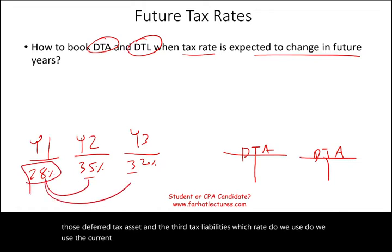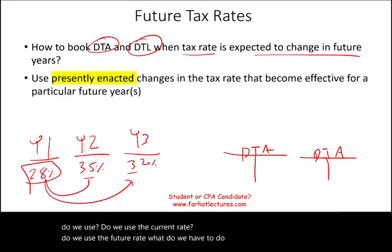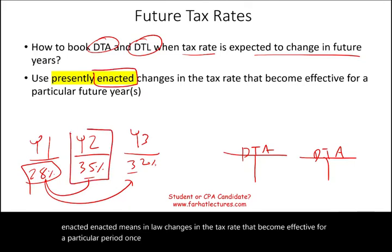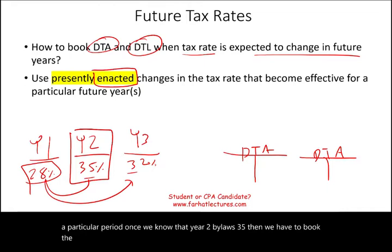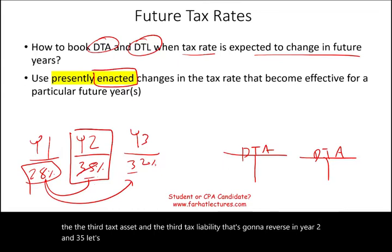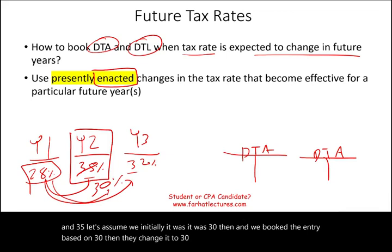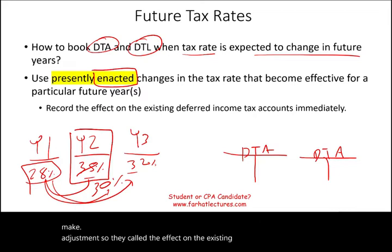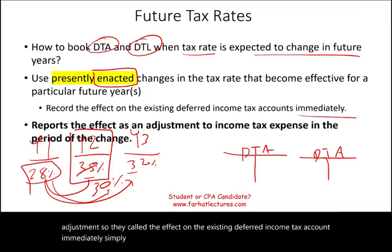Do we use the current rate? Do we use the future rate? Well, we use the presently enacted rate — 'enacted' means in law — changes in the tax rate that become effective for a particular period. Once we know that year two by law is 35%, then we have to book the deferred tax asset and the deferred tax liability that's going to reverse in year two at 35%. Let's assume initially it was 30% and we booked the entry based on 30%, then they change it to 35%. If that's the case, we have to make an adjustment — record the effect on the existing deferred income tax account immediately, and report the effect as an adjustment to income tax expense in the period of change.